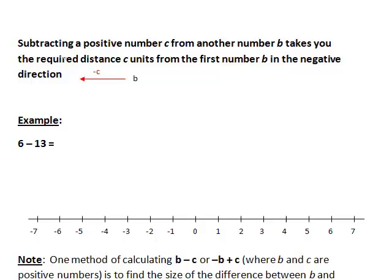What would happen now if we subtract a positive number from another number? Subtraction will take us the required number of units from the first number in the negative direction, that is moving from right to left. For example, if we looked at 6 - 13, then 6 is here minus 13, so we need to count along 13 units in the negative direction. You might just want to pause and try that now.